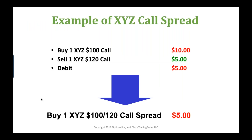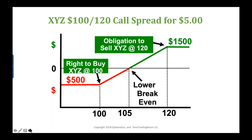For example: buying an XYZ 100 call and selling an XYZ 120 call — that's buying the lower and selling the higher. The option you're buying costs more than the one you're selling, so you have a net debit to your account. You'd be buying the XYZ 100/120 call spread for five points — $500 is the most you can risk. At the 100 strike you have the right to buy XYZ at 100; at the 120 strike you're obligated to sell XYZ at 120.